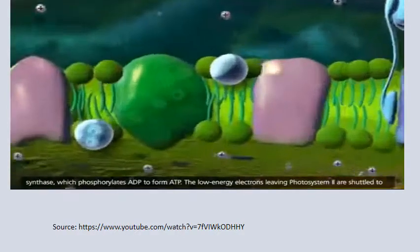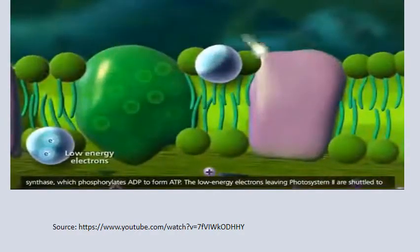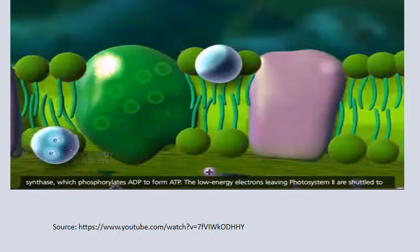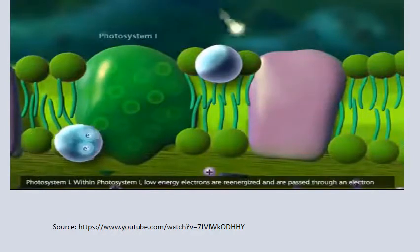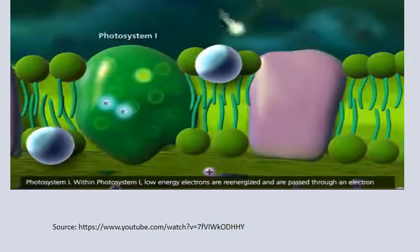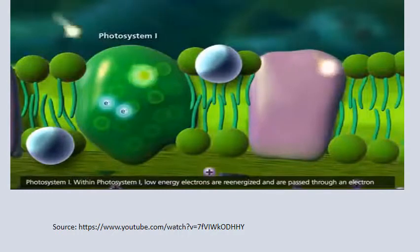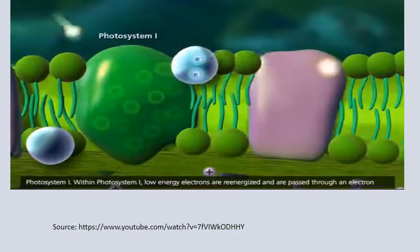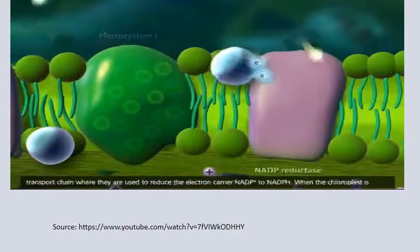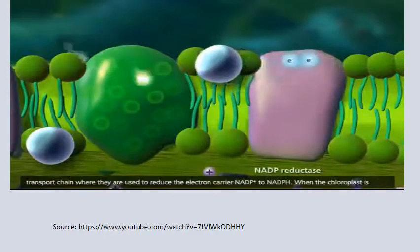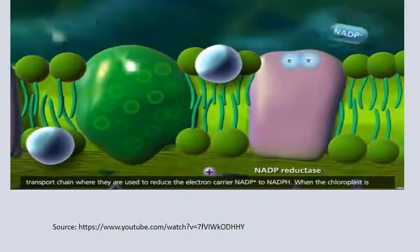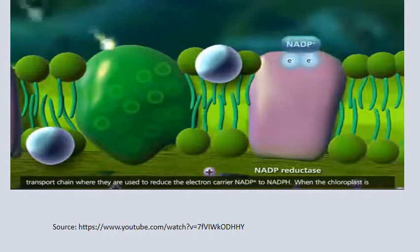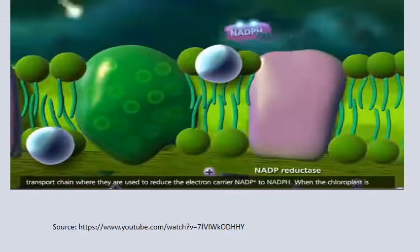The low-energy electrons leaving photosystem 2 are shuttled to photosystem 1. Within photosystem 1, these low-energy electrons are re-energized and passed through an electron transport chain where they are used to reduce the electron carrier NADP+ to NADPH.